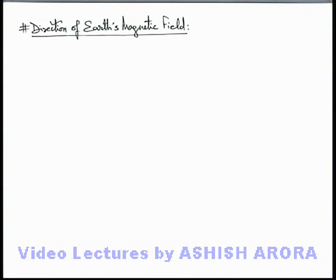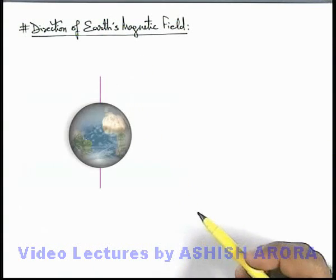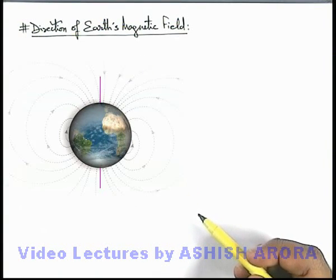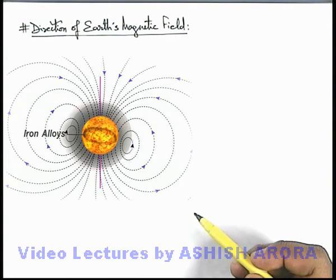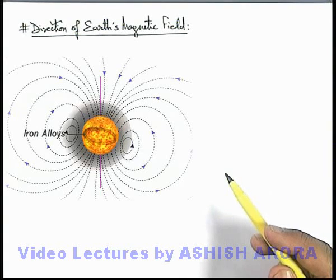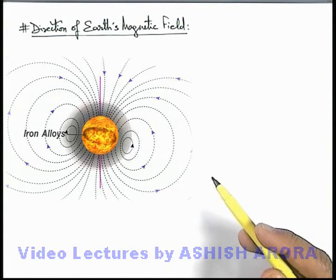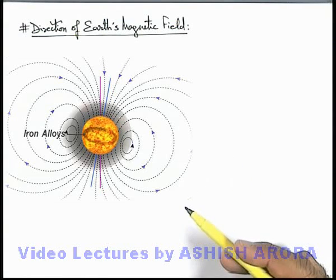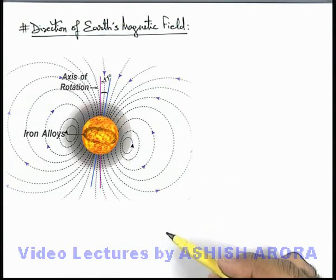Let us study some facts about the direction of Earth's magnetic field. As we have already seen, Earth's magnetic field is due to the rotation of iron alloy particles inside the core of Earth. Due to this, the magnetic field originates from the southern hemisphere of Earth and terminates on the northern hemisphere. The magnetic axis of Earth is approximately at an angle of 11 degrees with respect to the rotation axis of Earth.